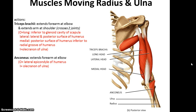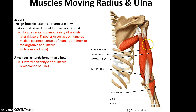We also have the triceps brachii, located on the posterior side of the humerus. It extends the forearm at the elbow and also extends the arm at the shoulder, because it has heads that cross both the shoulder and elbow joint. Its long head originates at the inferior glenoid cavity of the scapula; its lateral head at the lateral and posterior surface of the humerus; and its medial head at the posterior surface of the humerus inferior to the radial groove. Its insertion is the olecranon of the ulna. Then there's the small anconeus muscle, which also extends the forearm at the elbow. Its origin is the lateral epicondyle of the humerus, and its insertion is the olecranon of the ulna.